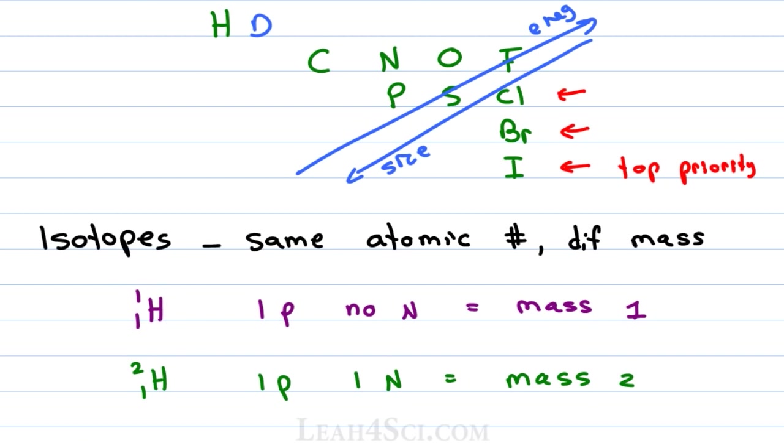This is the only time where you're going to look at atomic mass instead of atomic number to rank substituents on a chiral center. So when present, hydrogen is always your lowest priority than deuterium.